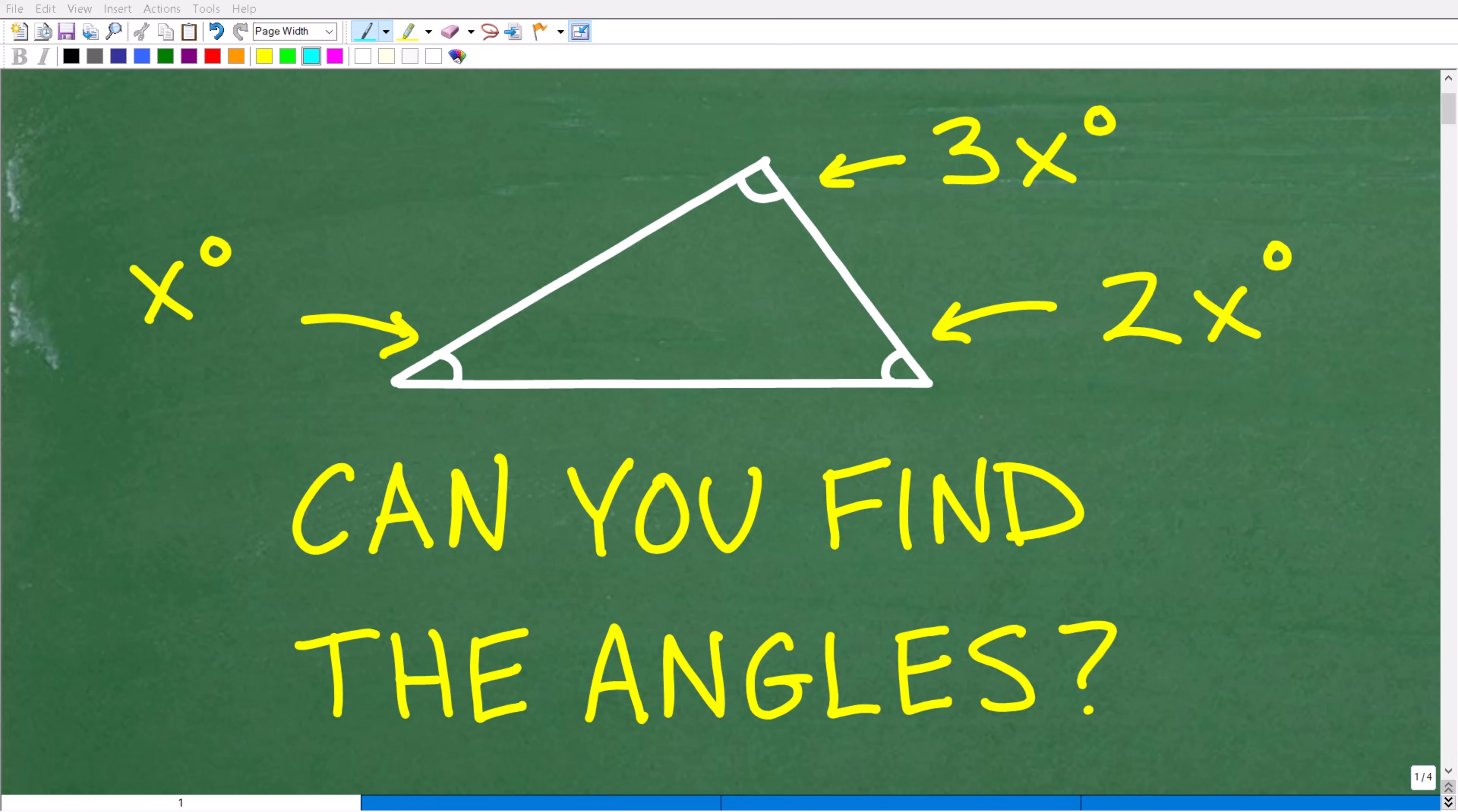But here is the question: we want to find the angles of this triangle. So this angle in the triangle is x degrees, this angle right here is 2x degrees, and this angle right here is 3x degrees. What are the actual angles?